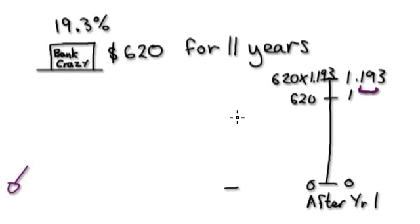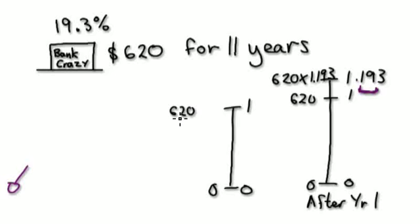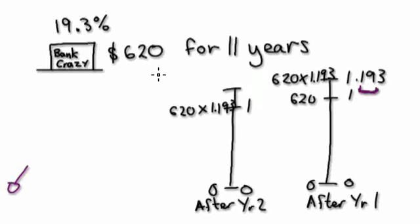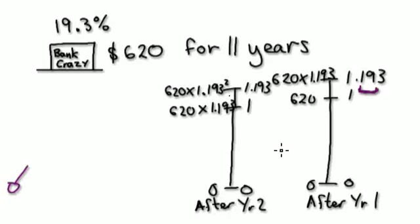And then jump to year 2. Year 2 would look something like this. Your new 100% would be 620 times 1.193. But then after year 2, you will have another bit of interest — 1.193. So up here would be 620 times 1.193 squared. We've done two diagrams — let's do the dot, dot, dot and jump to year 11.